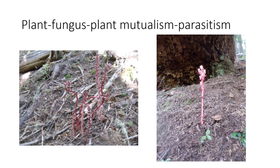There is also an interesting plant-fungus-plant mutualism slash parasitism relationship. This involves a plant that is parasitic on the mutualist of another plant. This is an Ericaceae — in the rhododendron and blueberry family. These little candy cane plants are able to parasitize the mutualistic mycorrhizae in the forest, taking nutrients away from the mycorrhizae, which originally got their nutrients from nearby trees. These are non-photosynthetic plants and are interesting to look for when out in the forest.